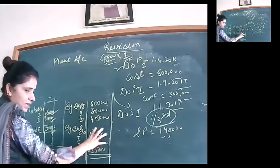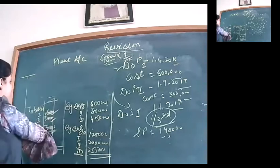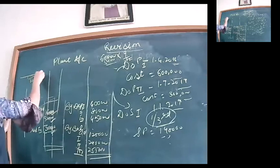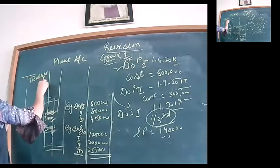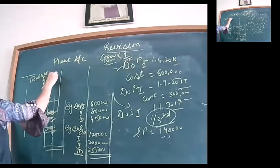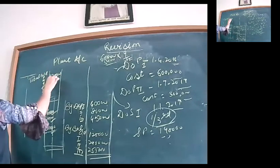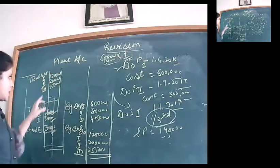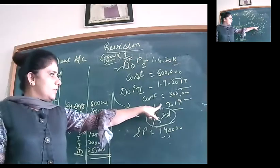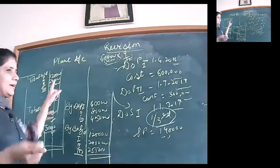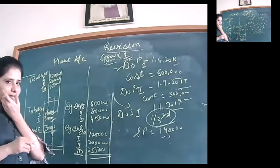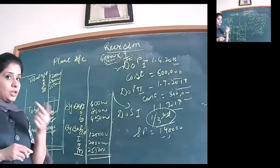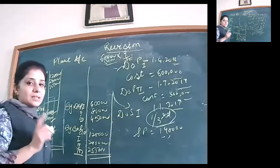In year 3, carry forward the three closing balances as opening balances: ₹1,20,000 (1/3 of Plant 1), ₹2,40,000 (2/3 of Plant 1), and ₹2,55,000 (Plant 2). We are selling the 1/3 portion on 1st January. First, charge depreciation for 9 months on the sold part: ₹30,000.